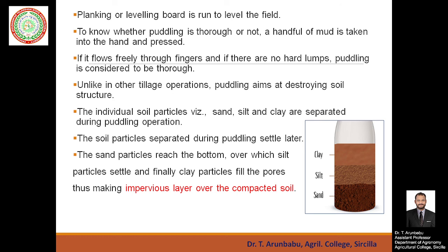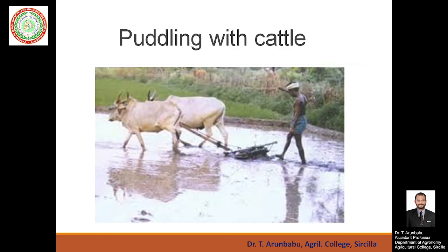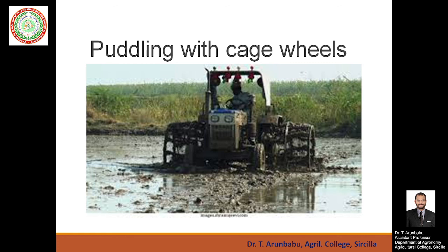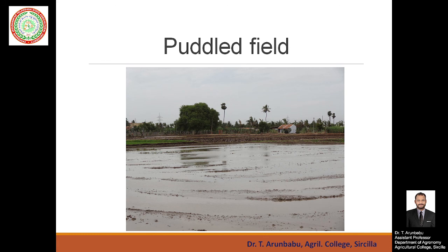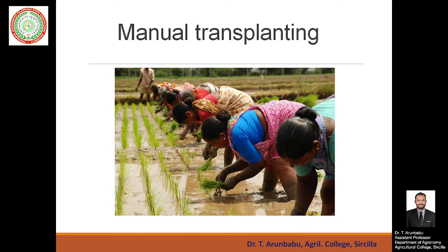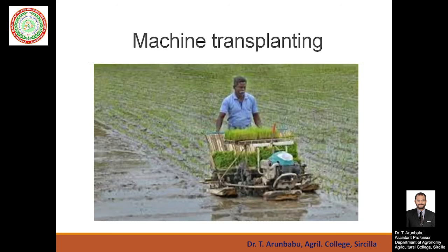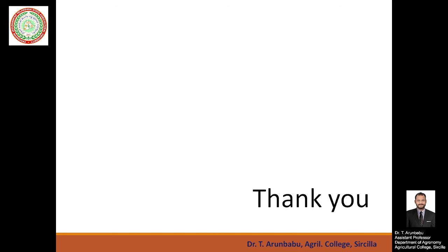The disadvantage of puddling is that it destroys soil structure by separating soil particles from soil aggregates. Images show puddling carried out with cattle, with tractor cage wheels, and with rotavators. After puddling, a levelling board is run over the field to bring the soil to a uniform level. The puddled field is then ready for different types of transplantation — manual transplantation or machine transplanting. This concludes lecture number five.